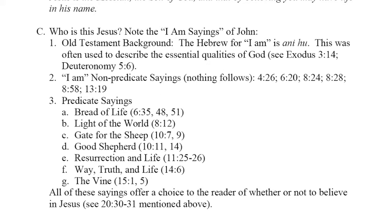Who is this Jesus? In John's Gospel, there are some unusual statements made by Jesus. Jesus says 'I am' many times in this Gospel. This recalls the Old Testament background. The Hebrew for 'I am' is 'ani hu,' which was often used to describe the essential qualities of God. When Moses asked God who was sending him to free the Egyptian slaves, God simply said, 'I am.' These are non-predicate sayings — used a number of times — where we would expect something afterwards, but Jesus is echoing the 'I am' of the Old Testament.